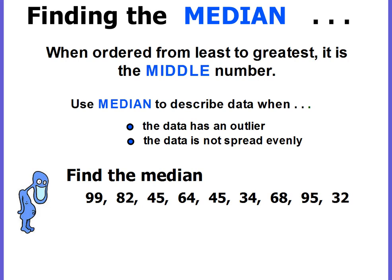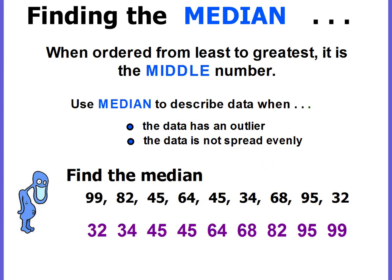Finding the median. When ordered from least to greatest, the median is the middle number. Median means middle. We use the median to describe our data when the data has an outlier or it's not spread out evenly. Here's our set of data. First, you order them from least to greatest — put them in order from the smallest number to the largest number. Then you can cross out a low, cross out a high, cross out the next low, the next high, and keep going until you're left with just one number in the middle, which is 64. So 64 would be the median.